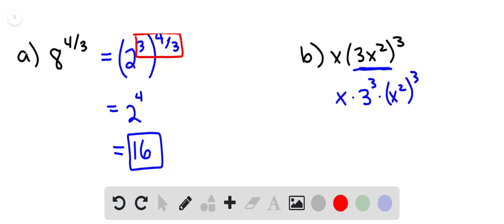And just like we saw in part a, we're going to use the power rule and multiply the powers 2 and 3. So now we have x times 3 cubed, which is 27, times x to the 6th power.